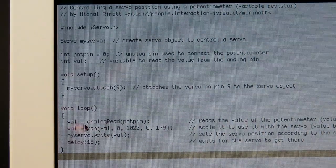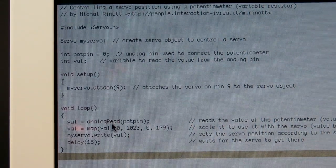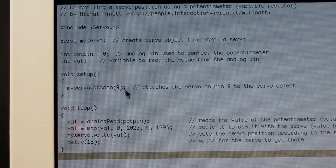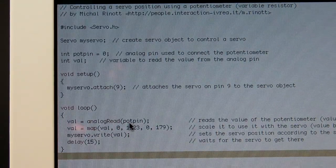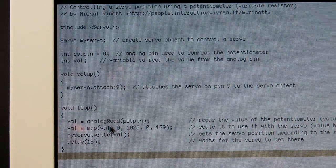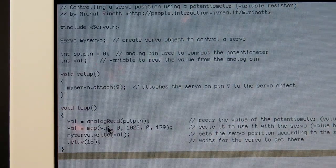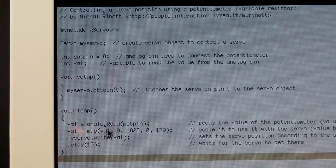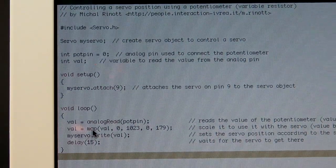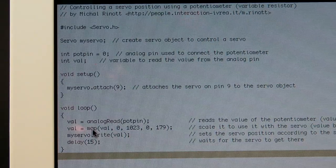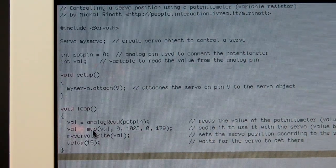First one is val equals analogRead, kind of like analogWrite that we've used in earlier how-tos, potPin. And the potPin is zero, so we're saying this value equals the analog value of pin zero, pretty simple. And that's going to be between zero and 1023, so there's 1024 steps in total because zero is one of them. The next one says that val equals, and this is using a function called map.